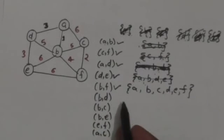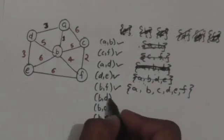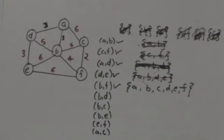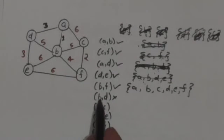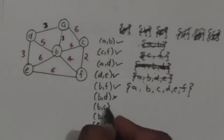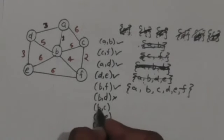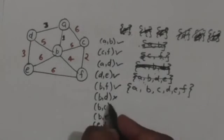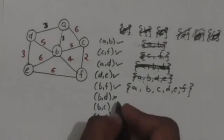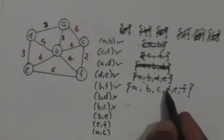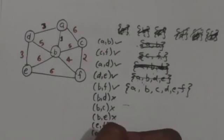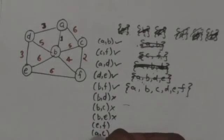Now the next edge is BD. Both vertices B and D are in the same set, so we will not select this edge. Next edge is BC — again both vertices B and C are in the same set, so we will not select this edge. Next edge is EF — both vertices E and F are in the same set, so we will not select this edge either.